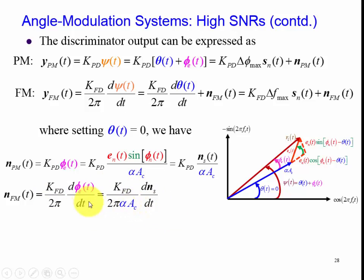Notice what we did is, since alpha A_c is a constant, we pull it out of the derivative, and that appears as a denominator as two pi alpha A_c. And now we have the derivative of a noise.